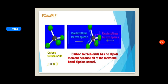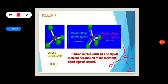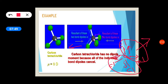Now let us see carbon tetrachloride. Carbon is at the center and 4 Cl atoms are at the four corners of a regular tetrahedron. The electrons move towards each Cl atom. There is an equal and opposite moment present — the resultant of the two bond dipoles on one side cancels with the resultant of the two on the other side, because all individual bond dipoles are equal and in opposite directions. Therefore, carbon tetrachloride has a dipole moment of 0.